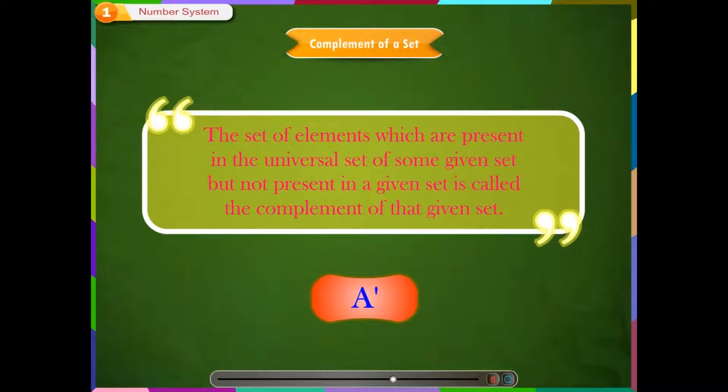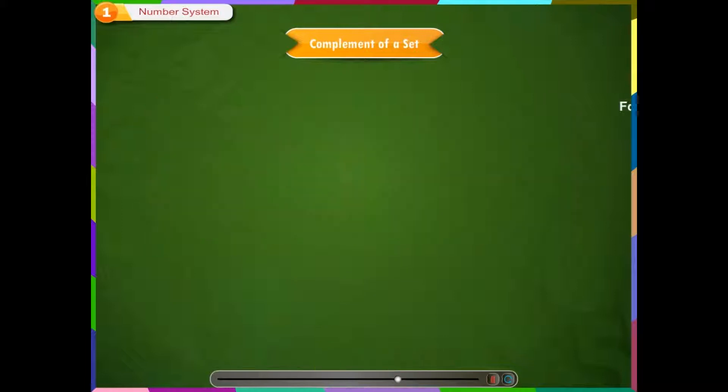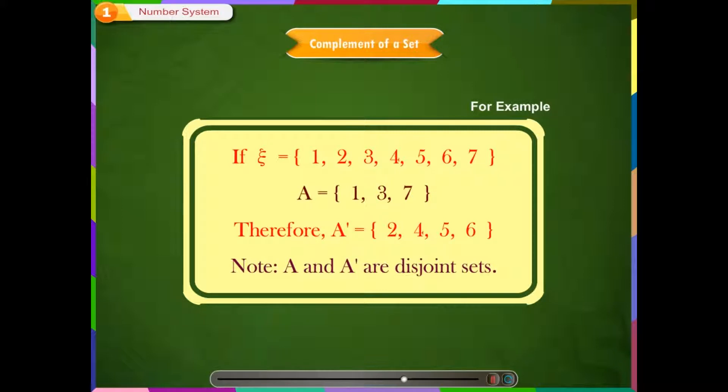For example, if universal set ξ is equal to 1, 2, 3, 4, 5, 6, 7, and the given set A is equal to 1, 3, 7.